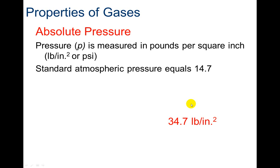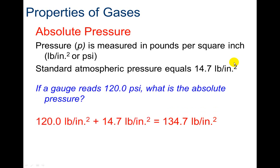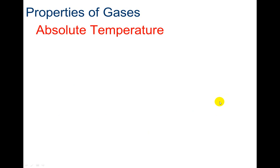But a lot of times it's easier just to say let's just go with standard, get that ideal. When you're talking about theoretical, what is my theoretical pressure going to be, sometimes it's easier just to use that standard atmospheric pressure when we're working problems. If a gauge reads 120.0 PSI, what is the absolute pressure? We just take 120 PSI plus 14.7 PSI, if we're using standard, would be 134.7 PSI.